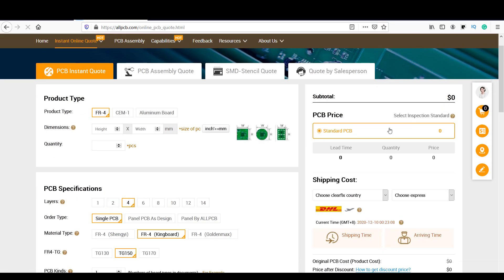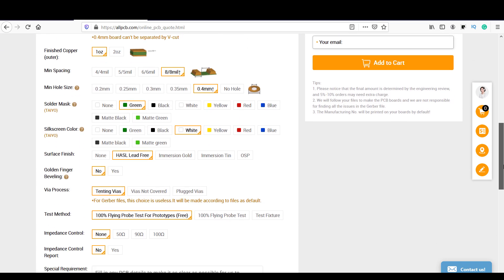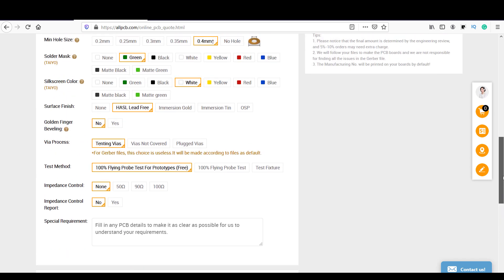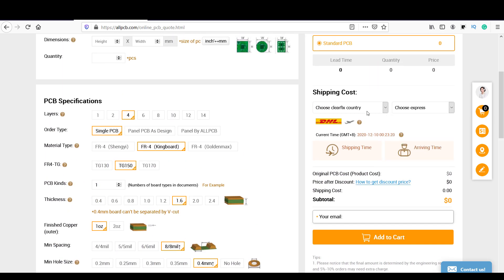To order your PCB, just click on the Quote Now button, add your PCB parameters and requirements, select your country and then add to cart.